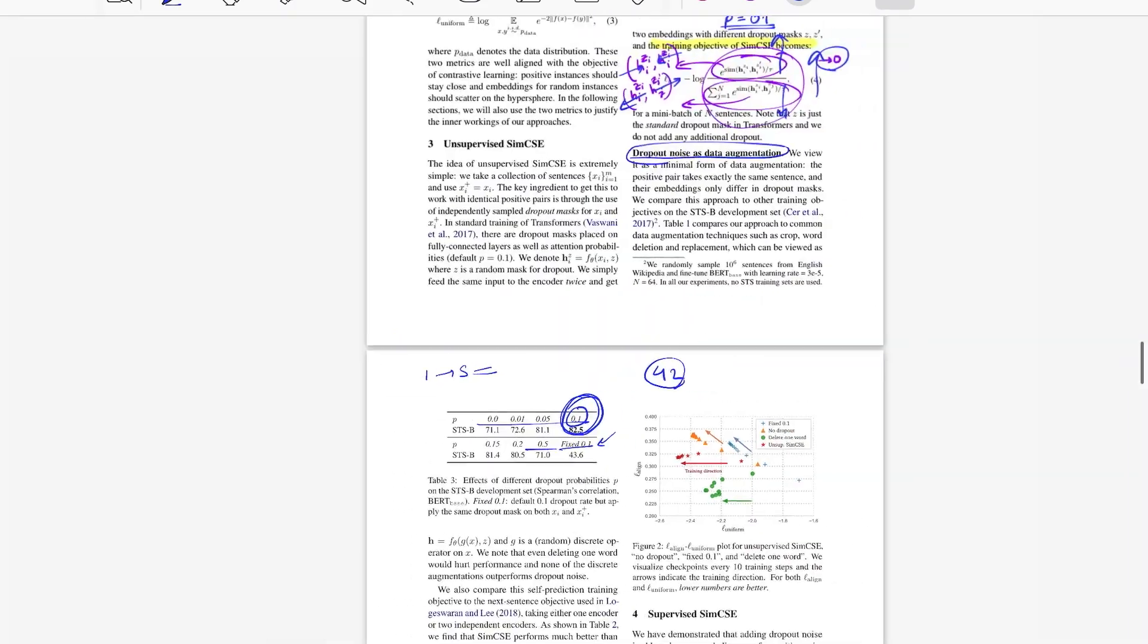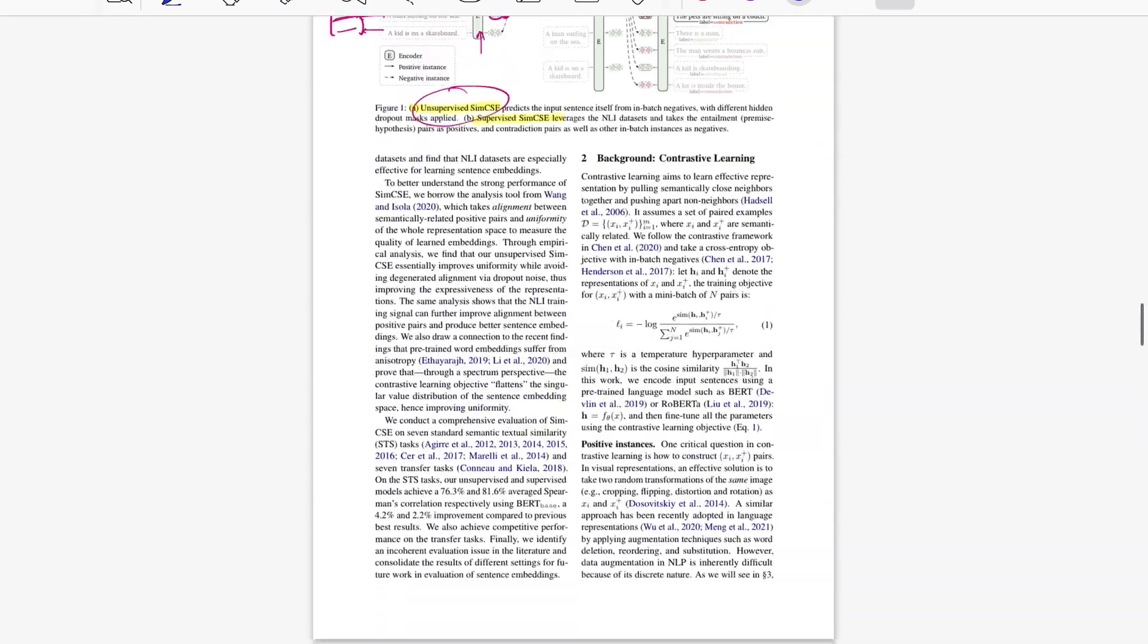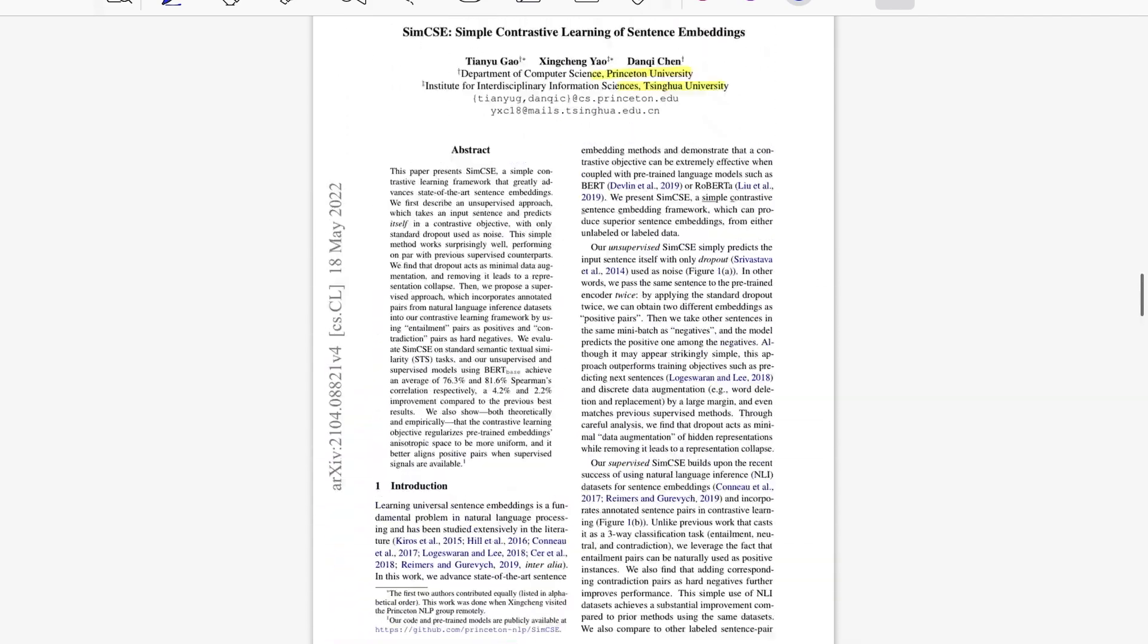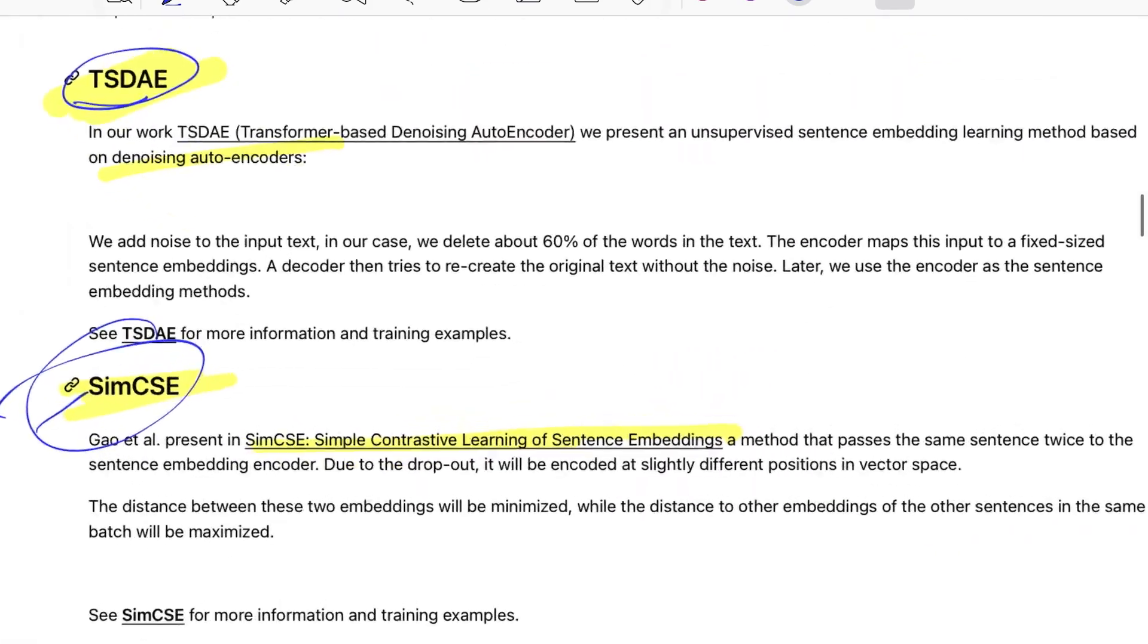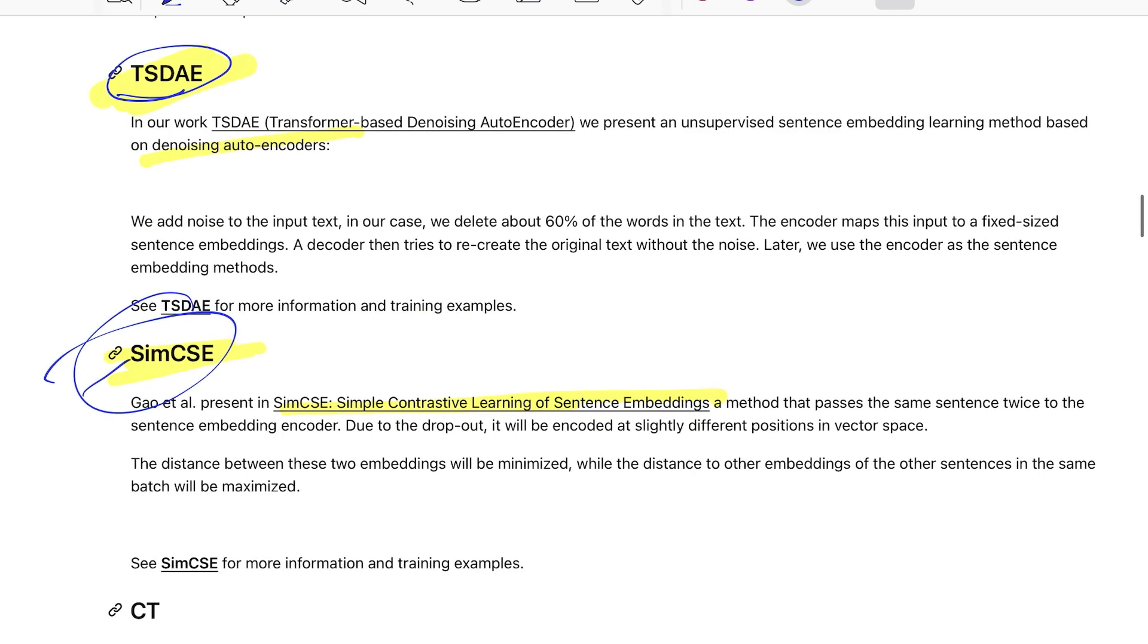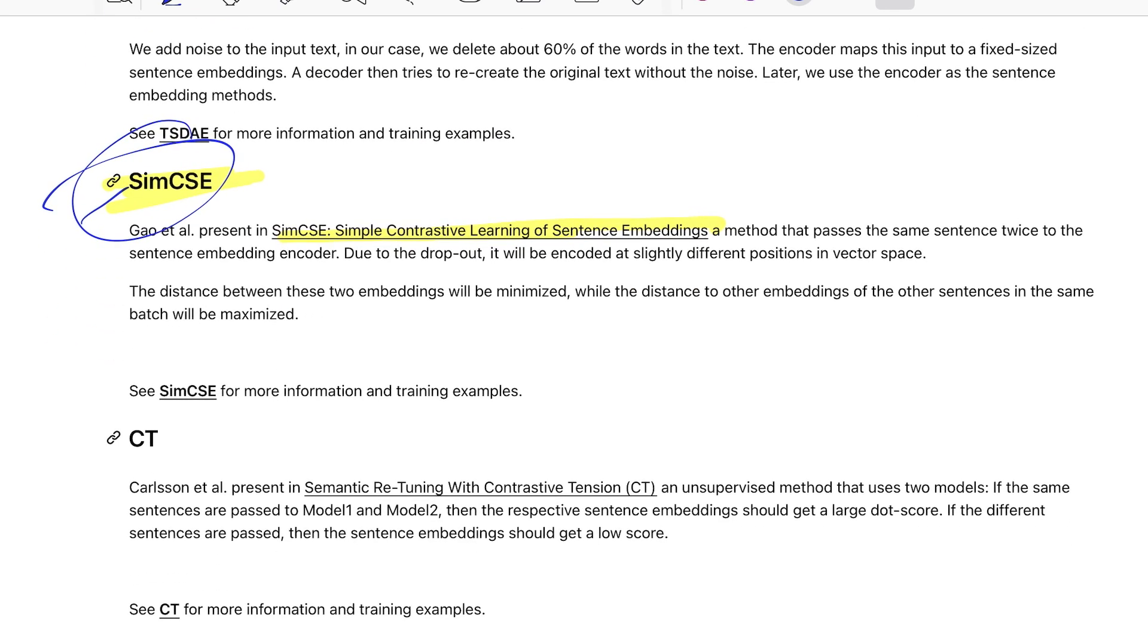So that was the idea that SimCSE for unsupervised learning brings onto the table. With this, we have an understanding of how SimCSE works. In the next video, I'll touch upon the paper, which is CT that stands for semantic retuning with contrastive tension. We're done with this video. I'll meet you in the next one. In the meantime, do check out other videos in the series and share it with your friends to whosoever you think is interested. I'll see you soon. Bye-bye.